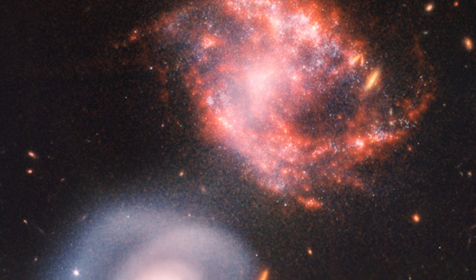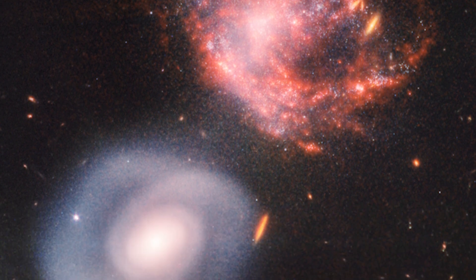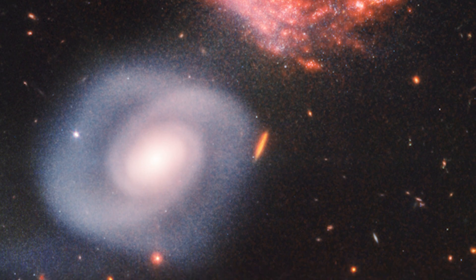To the left of the Cartwheel Galaxy are two smaller companion galaxies, with many more galaxies in the background.